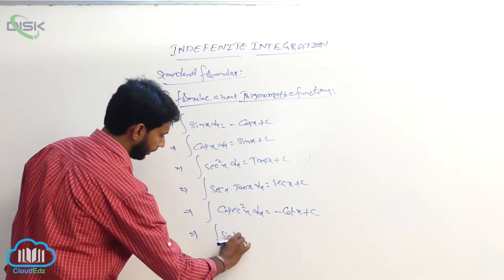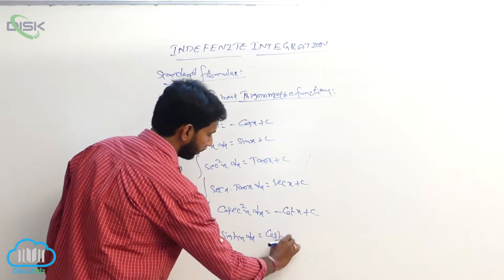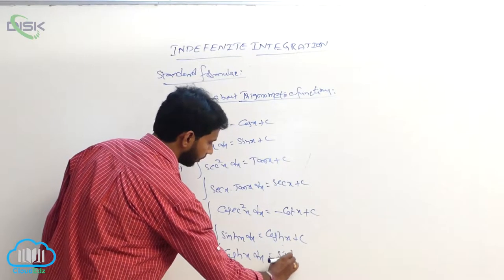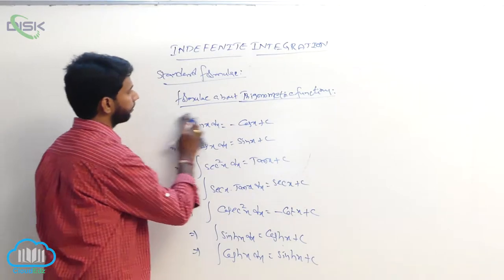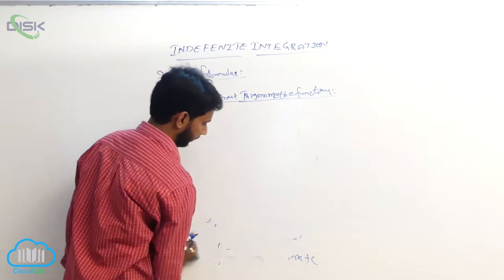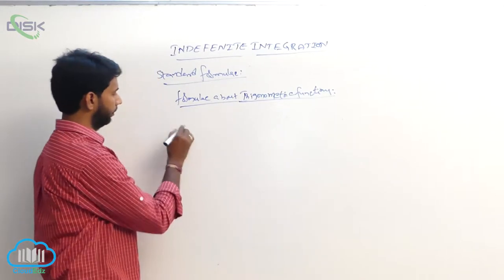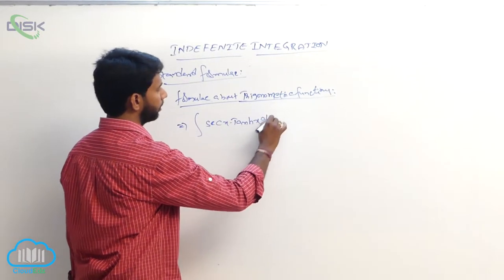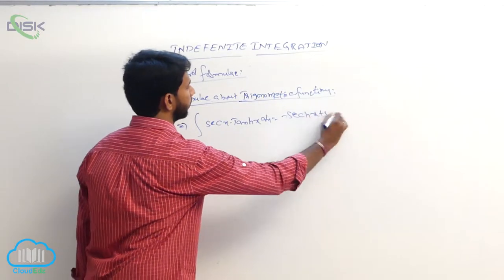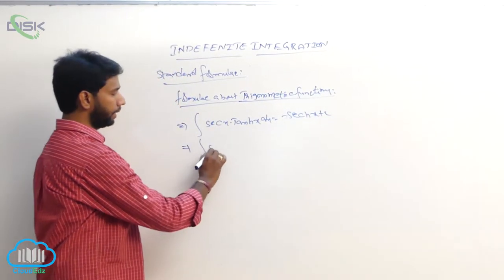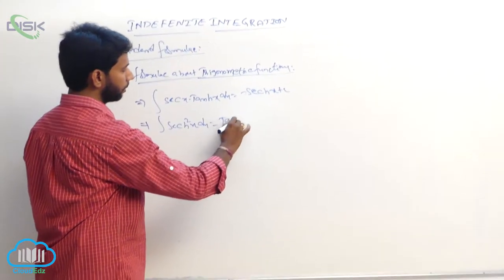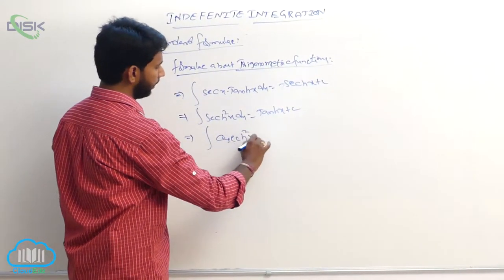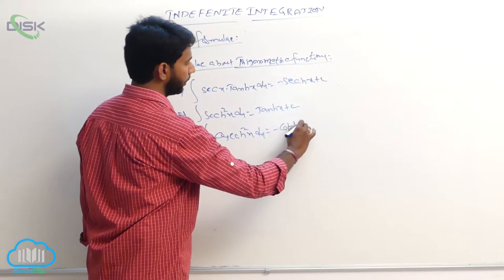Integral of sinh x dx equals cosh x plus constant. Integral of cosh x dx equals sinh x plus constant. Integral of sech x tanh x dx equals minus sech x plus constant. Integral of sech²x dx equals tanh x plus constant. Integral of csch²x dx equals minus coth x plus constant.